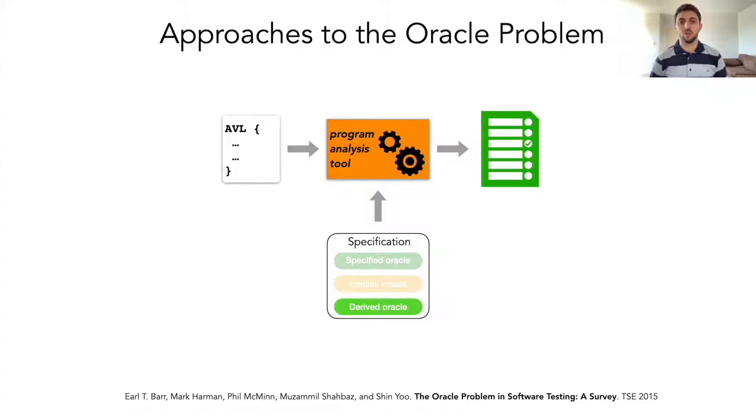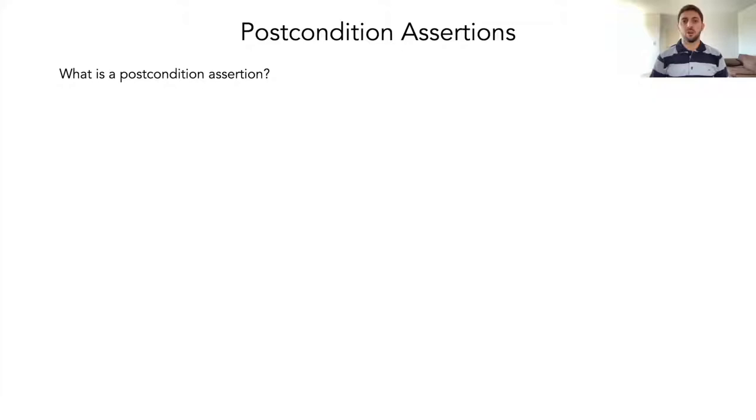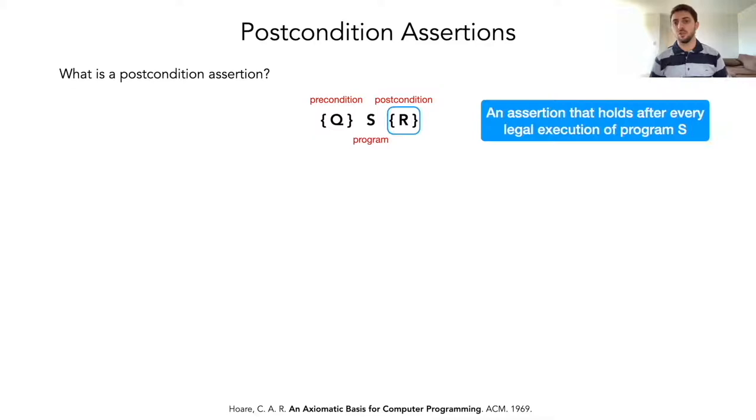Our work focuses on this last approach to the Oracle problem, and more precisely, in a particular type of Oracle called post-condition assertions. The term post-condition dates back to the work of Hoare that introduces this notation to analyze program correctness and defines the post-condition as an assertion that holds after every legal execution of program S.